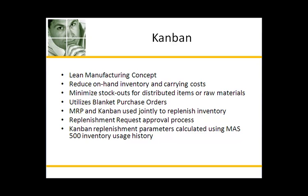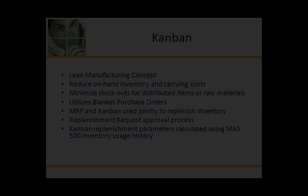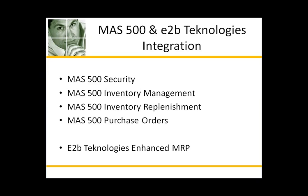Blanket purchase order functionality within MAS 500 is used to fulfill the bin replenishment request within the Kanban process. Replenishment is accomplished using both the E2B enhanced MRP module and the E2B Kanban module. MAS 500 inventory usage history drives the calculation of Kanban replenishment parameters. Kanban was created using the MAS 500 toolset and is integrated with MAS 500 security, inventory management, inventory replenishment, purchase orders, and the E2B Technologies enhanced MRP module.